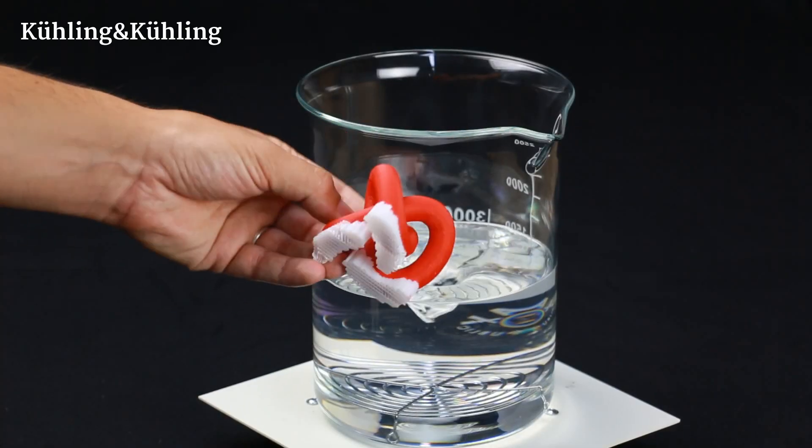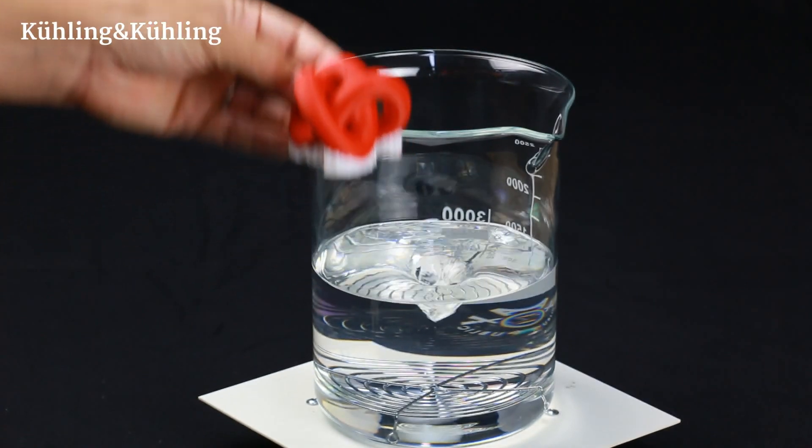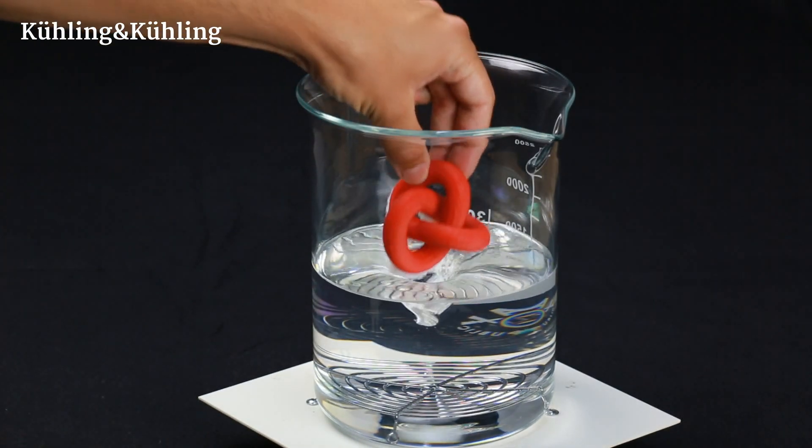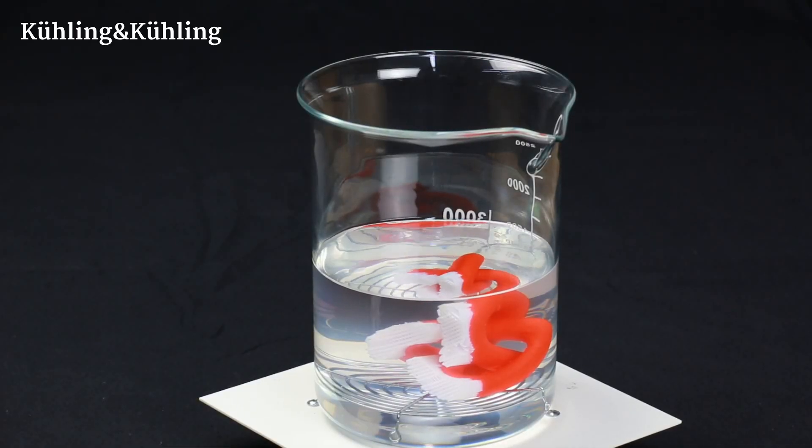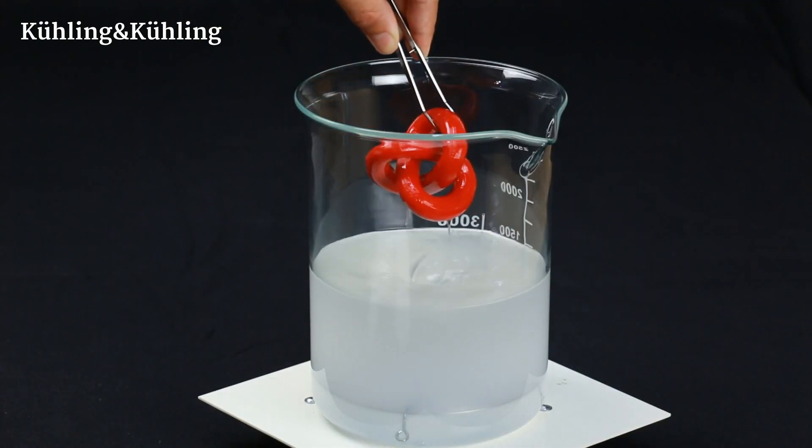Now to the relaxing part of the process. Drop the printed object into a bath of limonene-based washout solution, so that it is fully submerged. The bath is best stirred with a magnetic stirrer or similar to speed up the cleaning.